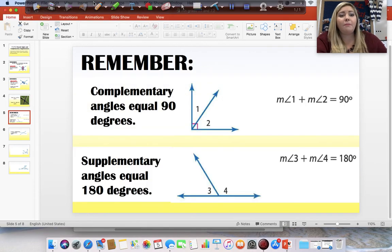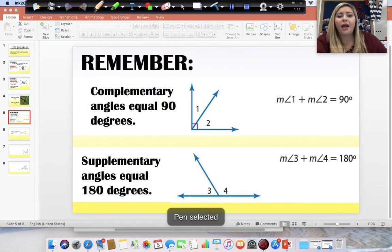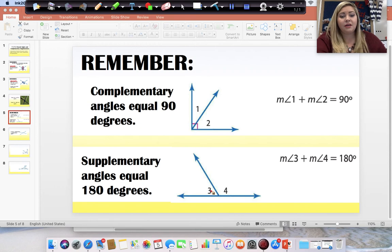All right. So, remember. Complementary angles equal 90 degrees. And, supplementary angles equal 180 degrees. Supplementary straight line. Complementary right angle.